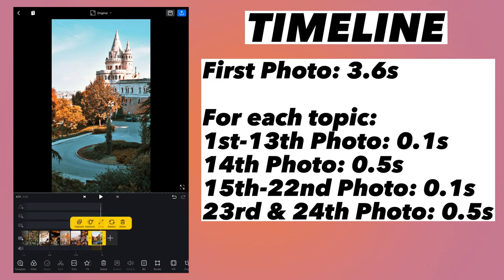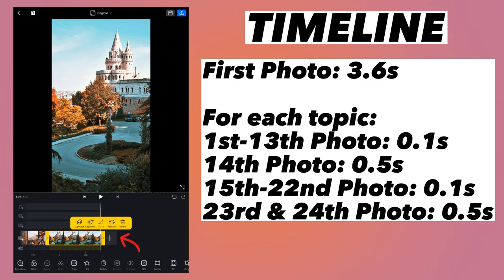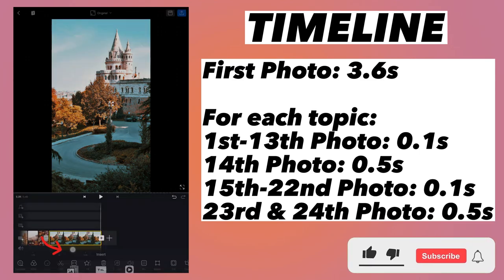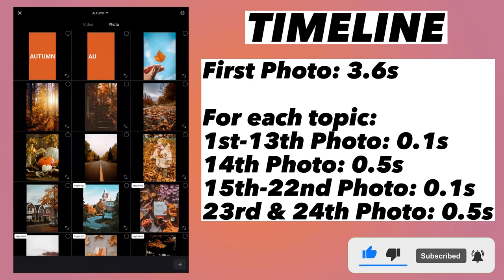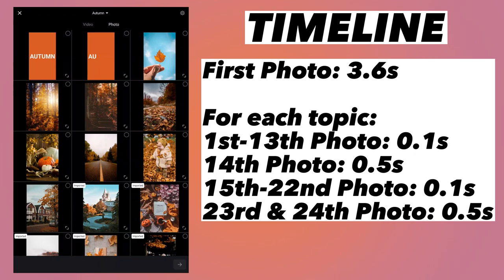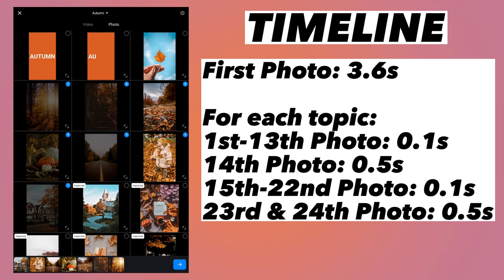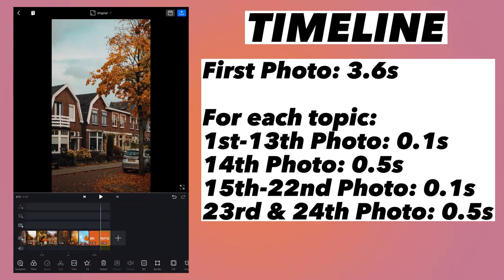Select the 14th photo and make it 0.5 seconds by dragging the right-hand end — so the 14th photo is 0.5 second timing. Now again move the playhead ahead, tap the plus button, tap video or photo, go to photos again and go to the autumn folder. Import the remaining photos — you will know which ones to import because already imported photos will have 'imported' written at the top. Select the rest of the photos and click the arrow button at the bottom.